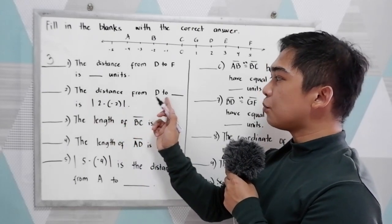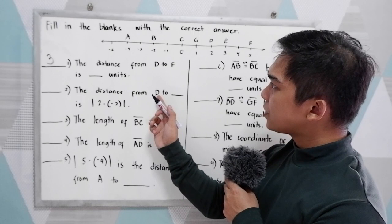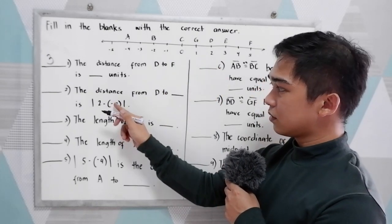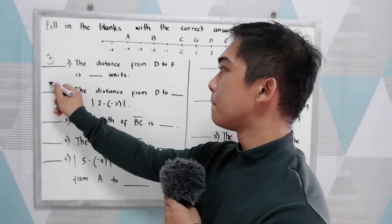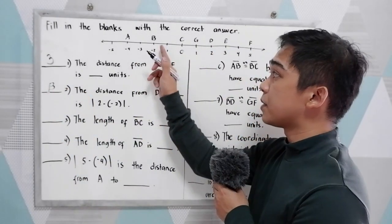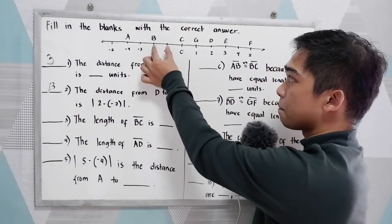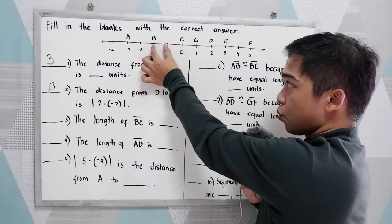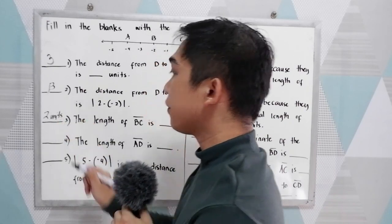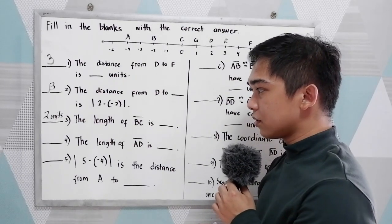Number 2: The distance from D to blank is the absolute value of 2 minus negative 2. We know D has a coordinate of 2, and the point with coordinate negative 2 is B. So from our ruler postulate, we substitute the points and their coordinates — the answer is B and D. Number 3: The length of segment BC is blank. From B to C there are 2 units. Or using the formula: the absolute value of negative 2 minus 0 equals the absolute value of negative 2, which gives us 2.